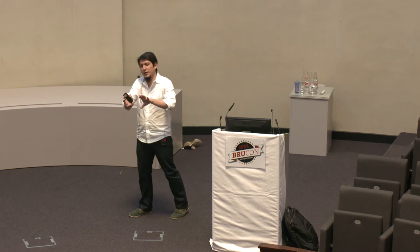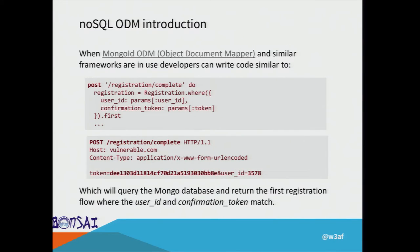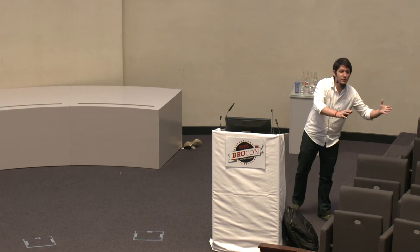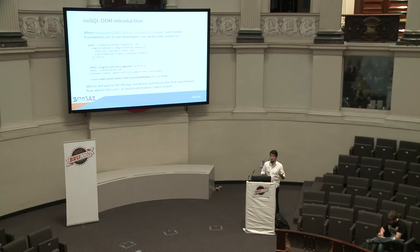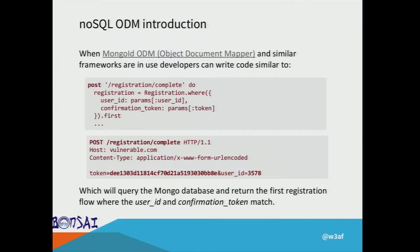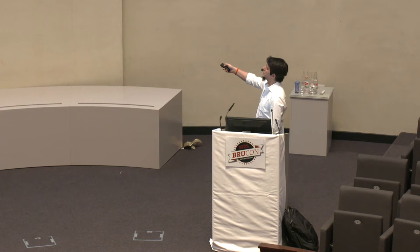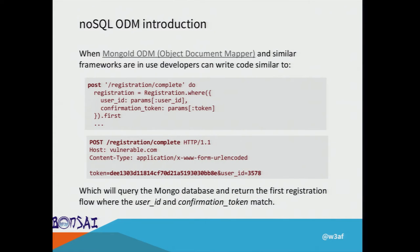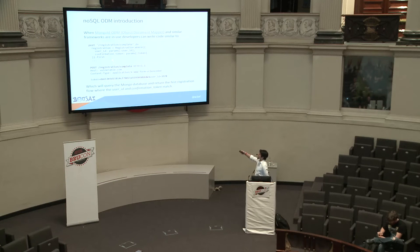When you use a MongoDB database in your Rails application, you'll most likely use something called Mongoid — a driver around MongoDB that lets you query documents, similar to using an ORM for SQL. It's called an ODM. If you're writing a Ruby on Rails application using Mongoid, you'd have a registration model and query it using syntax like: find registrations where user equals X and confirmation token equals Y.